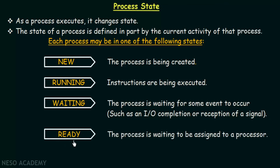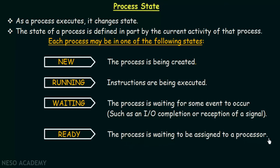Then we have the ready state. The process is waiting to be assigned to a processor. When the process has already been created — the new state is over — and it is not yet running, the process has to be assigned to a processor so that it can start its execution. At that moment we say that the process is in the ready state, waiting to be assigned to a processor so that it can begin or resume its execution.